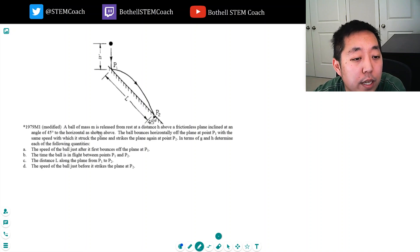So a ball of mass m is released from a distance h above a frictionless plane inclined at an angle of 45 degrees to the horizontal, as shown below. The ball bounces horizontally off the plane with the same speed at which it struck the plane and strikes the plane again at point P2.